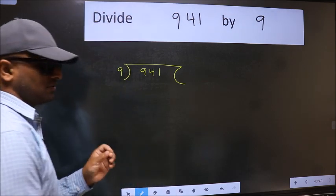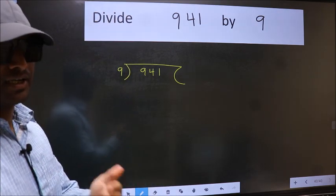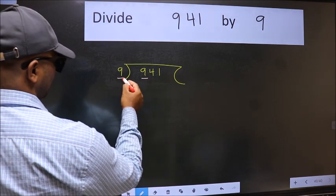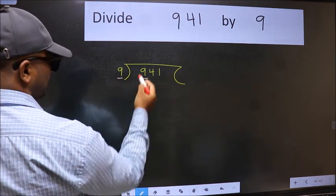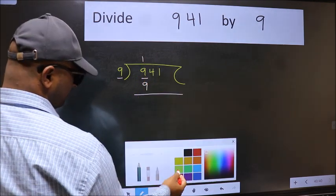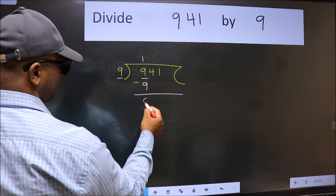This is your step 1. Next, here we have 9 and here 9. When do we get 9 in the 9 table? 9 once is 9. Now we should subtract. We get 0.